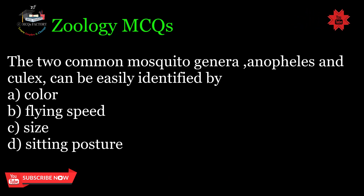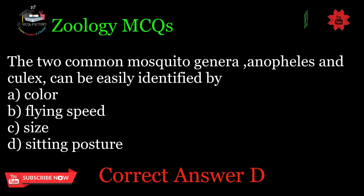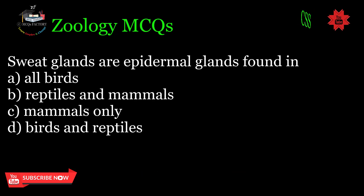The two common mosquito genera, Anopheles and Culex, can be easily identified by: A. Color, B. Flying speed, C. Size, D. Sitting posture. Correct answer: D.